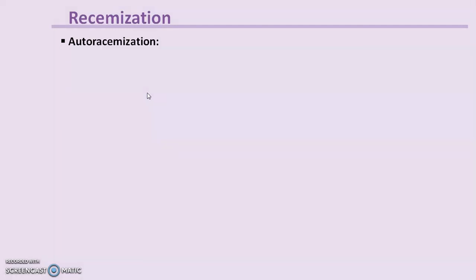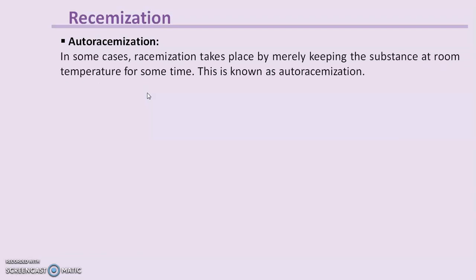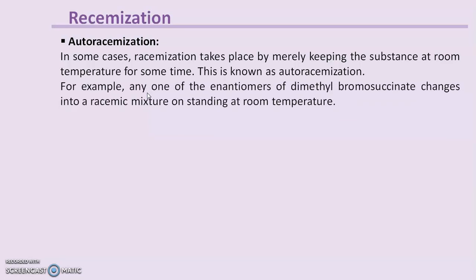The third method is auto-racemization, meaning racemization takes place by merely keeping the substance at room temperature for some time. For example, any one of the enantiomers of dimethylbromosuccinate changes into a racemic mixture on standing at room temperature.